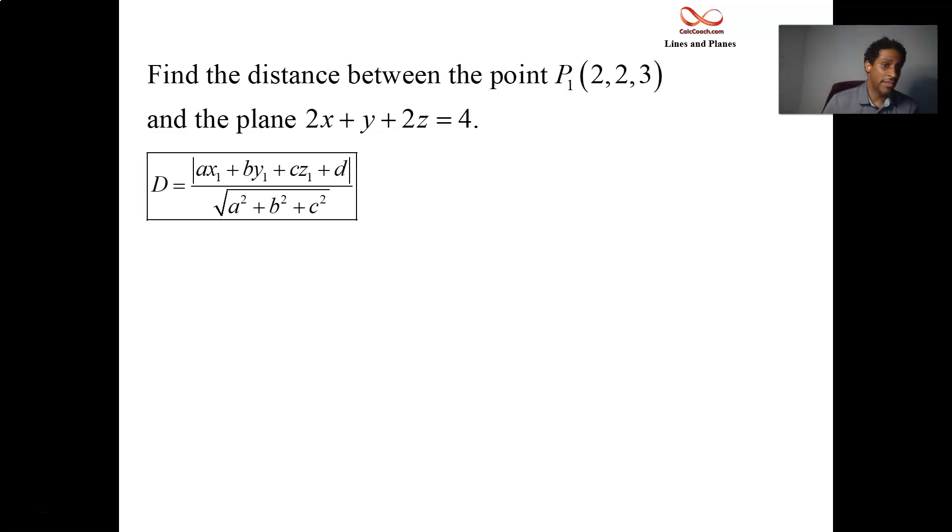We derive the formula from the other slide. Now let's just plug in. What's the value of A, B, and C and D? A is 2, B is going to be 1, and C is going to be 2. When it comes to D, be careful, the way I have D, it's when it's all set equal to 0.